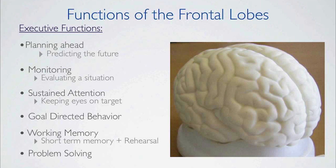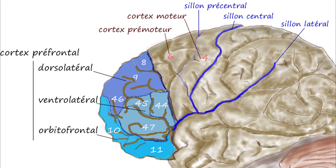The frontal lobe can be divided into a lateral, polar, orbital (above the orbit, also called basal or ventral), and medial part. Each of these parts consists of a particular gyrus. The lateral part consists of the lateral part of the superior frontal gyrus, the middle frontal gyrus, and the inferior frontal gyrus. The polar part consists of the frontopolar cortex, the transverse frontopolar gyri, and the frontomarginal gyrus. The orbital part consists of the lateral orbital gyrus, the anterior orbital gyrus, the posterior orbital gyrus, the medial orbital gyrus, and the gyrus rectus. The medial part consists of the medial part of the superior frontal gyrus and the cingulate gyrus.